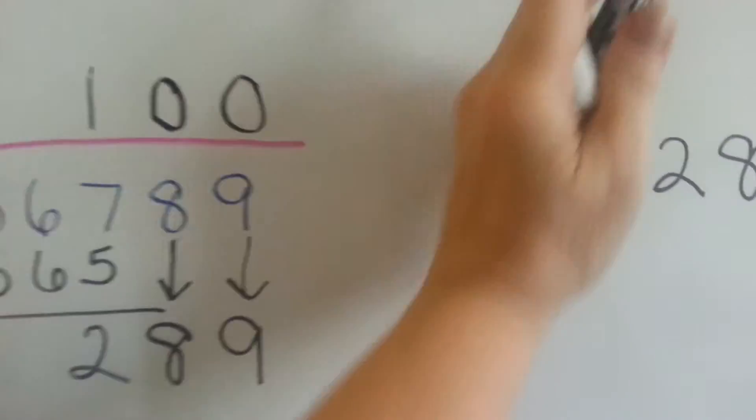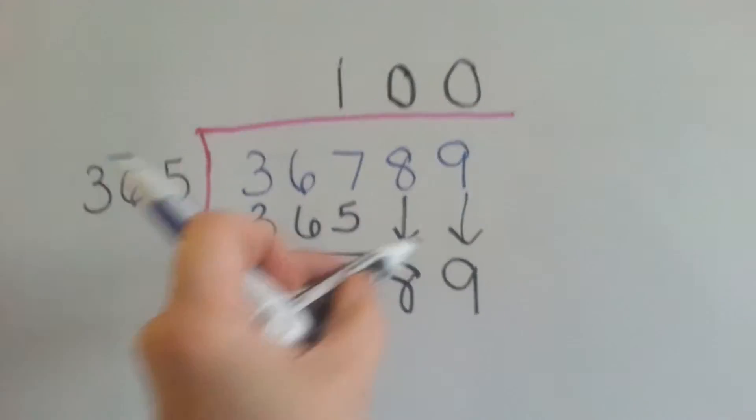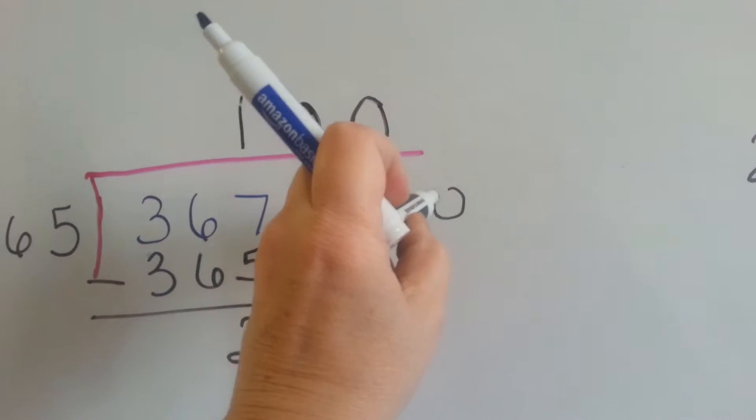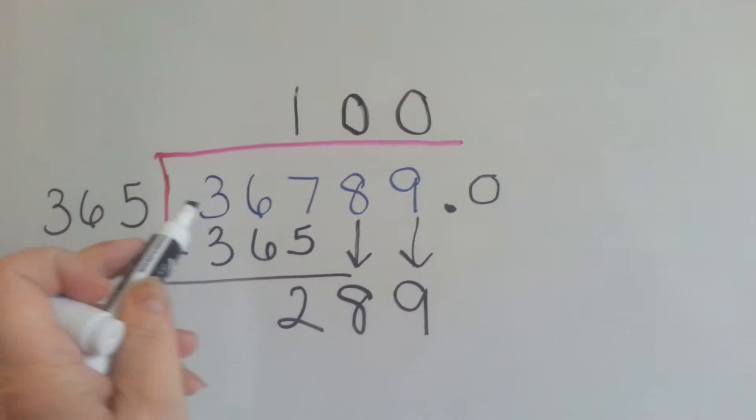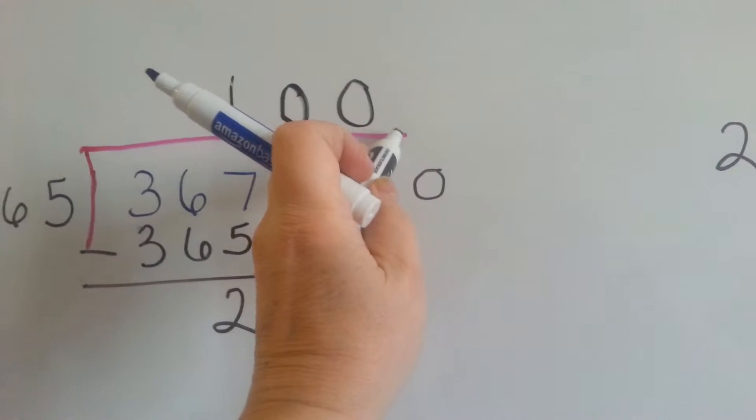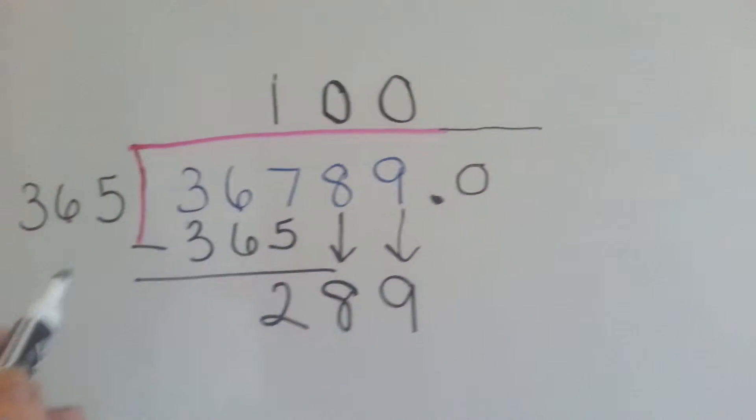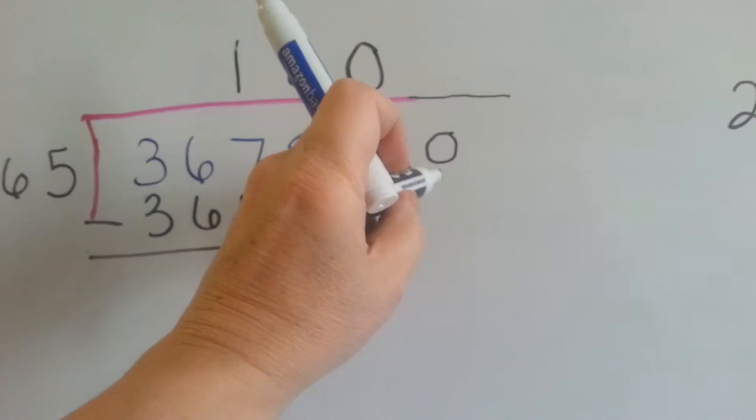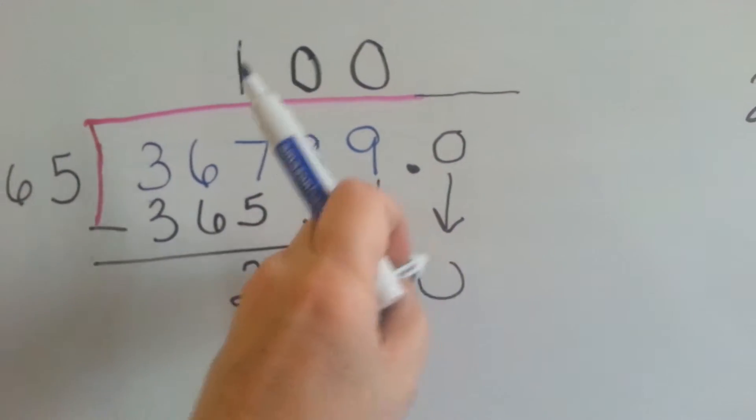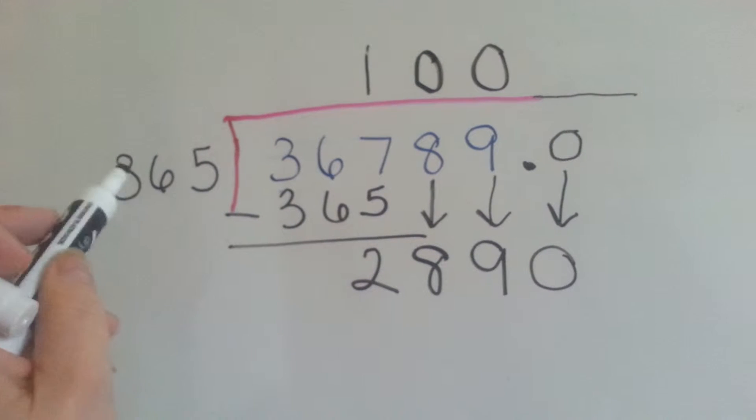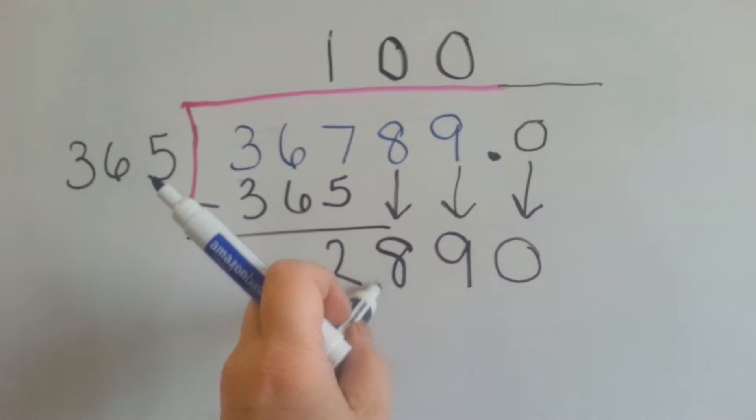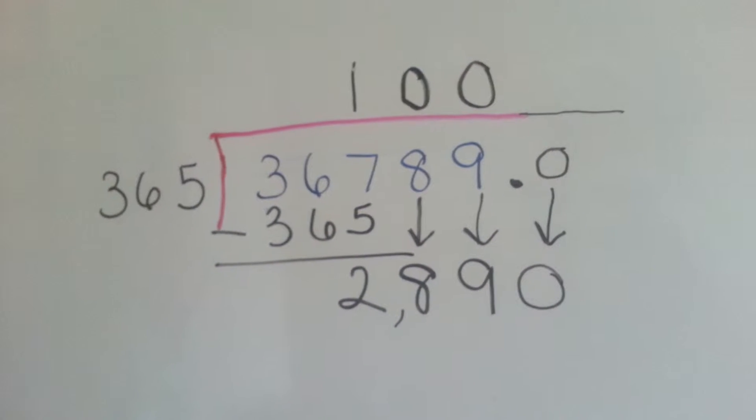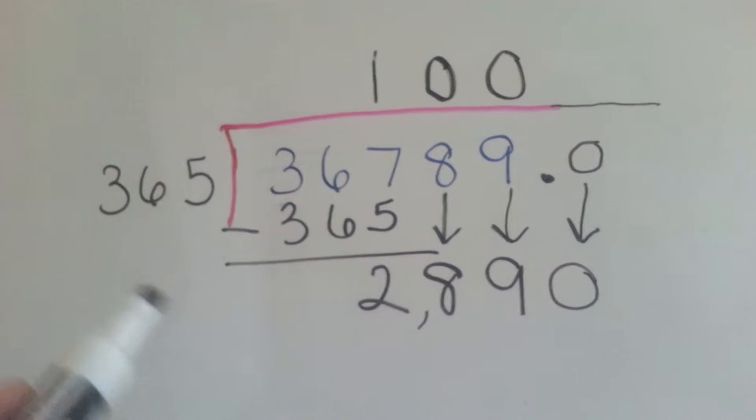Another way to do it is to keep going by adding a decimal point here. If we had a decimal point here, then we go into our tenths. We extend the division problem out, we bring the 0 down, and now we ask ourselves, can 365 fit into 2890? Yes, it can, but how many times?